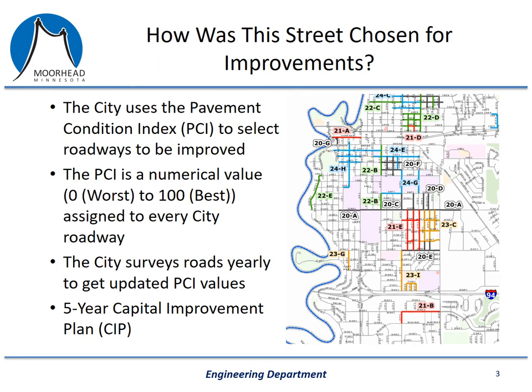You may be wondering how and why your street was chosen for improvements. The city uses a pavement condition index, or PCI for short, and this allows us to create a value — a grade or a score — as a representation of the condition of a road. The PCI is a numerical value with 0 being the worst and 100 being the best. Every street within the city gets one of these values and we update them yearly. The city hires a consultant to evaluate the condition of the road, and we feed that information into our pavement management software, which helps us determine which projects we should do based on our budget for that year.